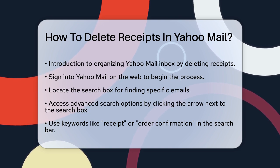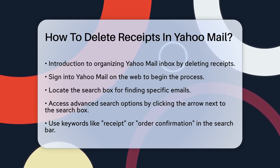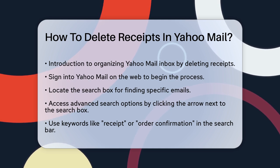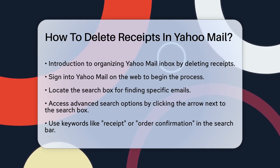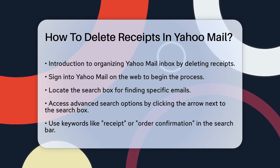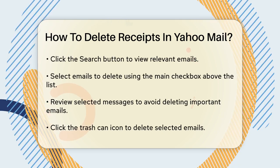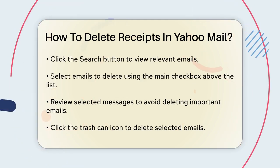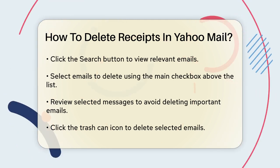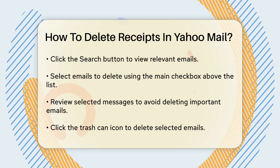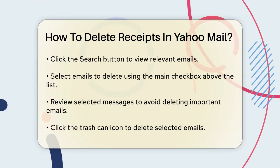Here's how. Sign in to your Yahoo Mail account on the web. Navigate to the search box labeled Find Messages, Documents, Photos, or People. Click on the advanced arrow on the right side of this box to access advanced search options. Input keywords like receipt or order confirmation in the search bar, then hit the search button to display all relevant emails.